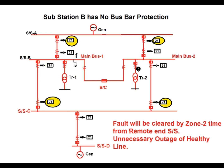So the first disadvantage of absence of bus bar protection is that a fault will be cleared under zone 2 time, which is 350 to 500 milliseconds time delay, and there may be catastrophic damage to the bus under heavy fault current. Again, there is unnecessary outage of healthy lines in the absence of bus bar protection.